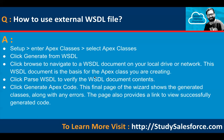How to use an external WSDL file? Go to Setup, and in the quick find enter Apex Classes, then select Apex Classes. Click Generate from WSDL. Click Browse to navigate to a WSDL document on your local drive or network — this WSDL document is the basis for the Apex class you are creating. Click Parse WSDL to verify the document contents. Click Generate Apex Code. This final page of the wizard shows the generated classes along with any errors, and provides a link to view the successfully generated code.